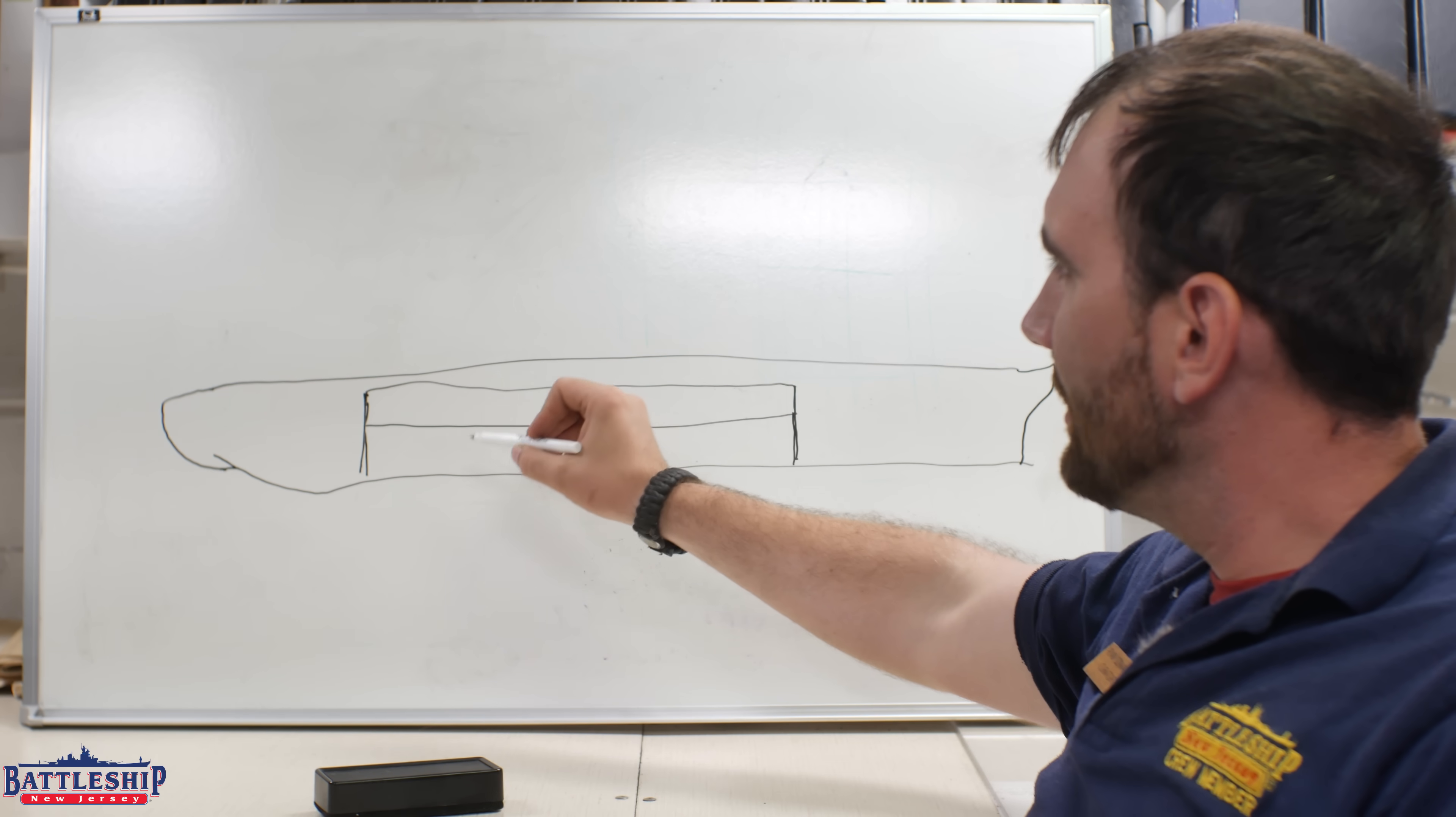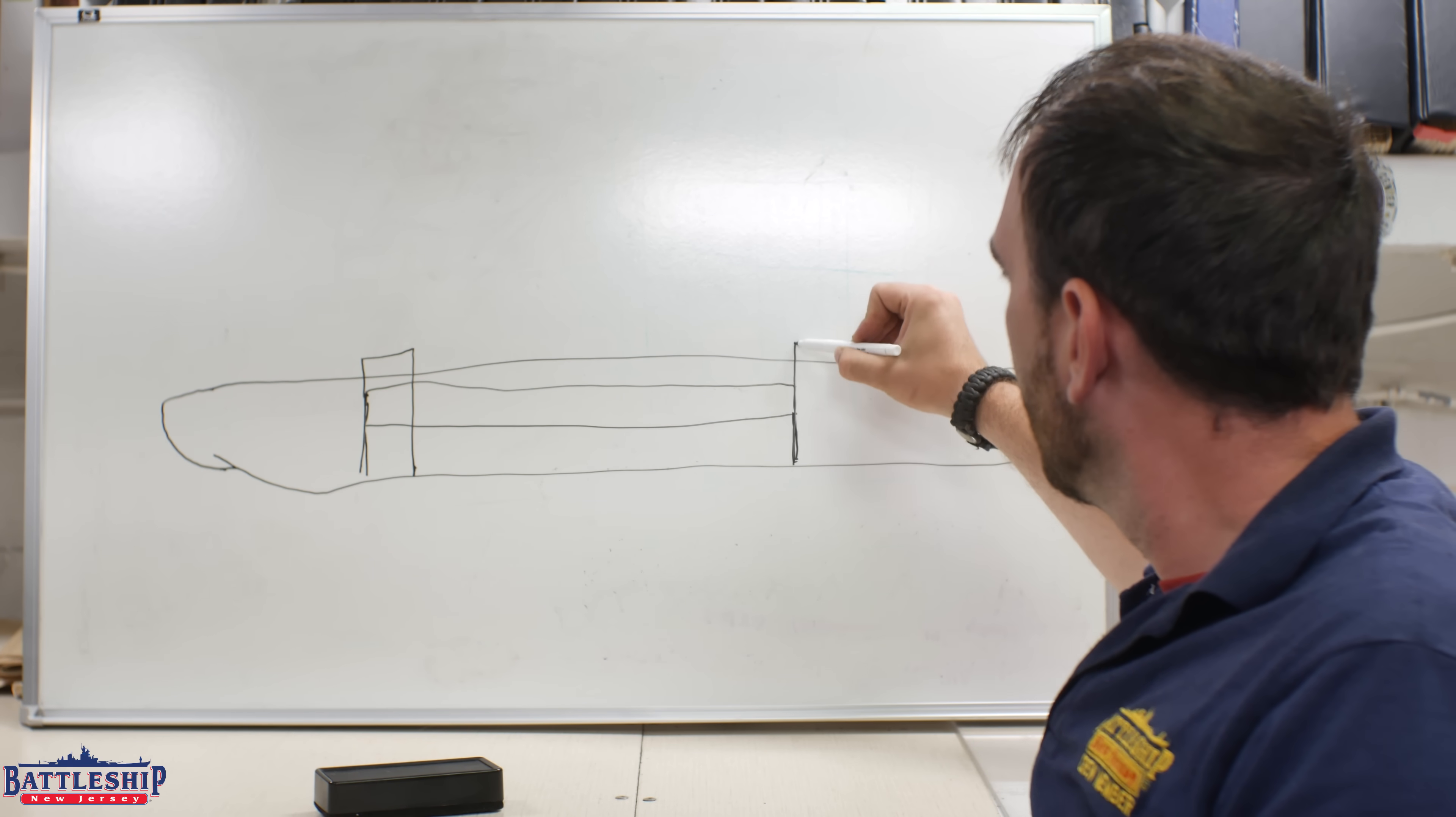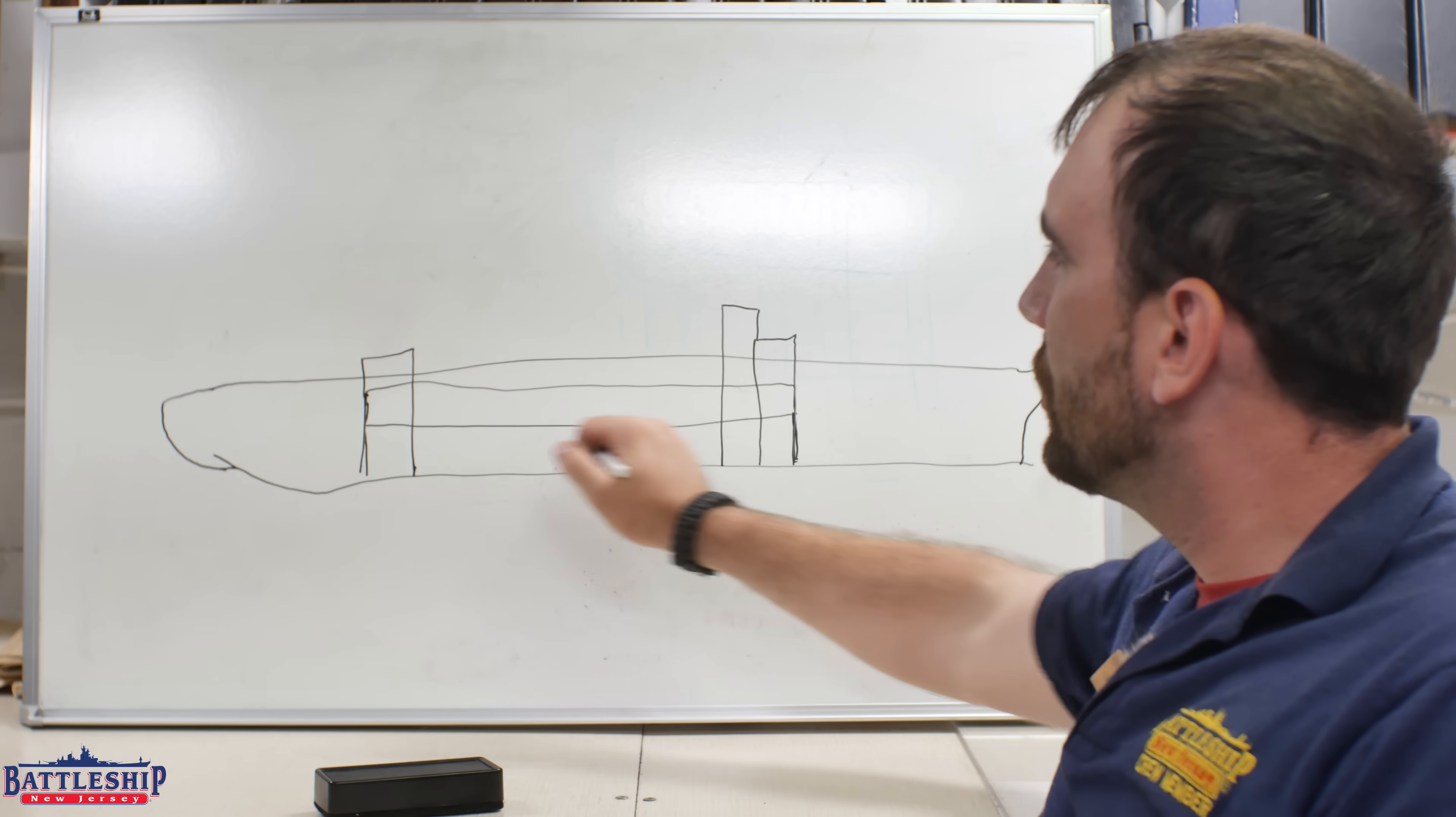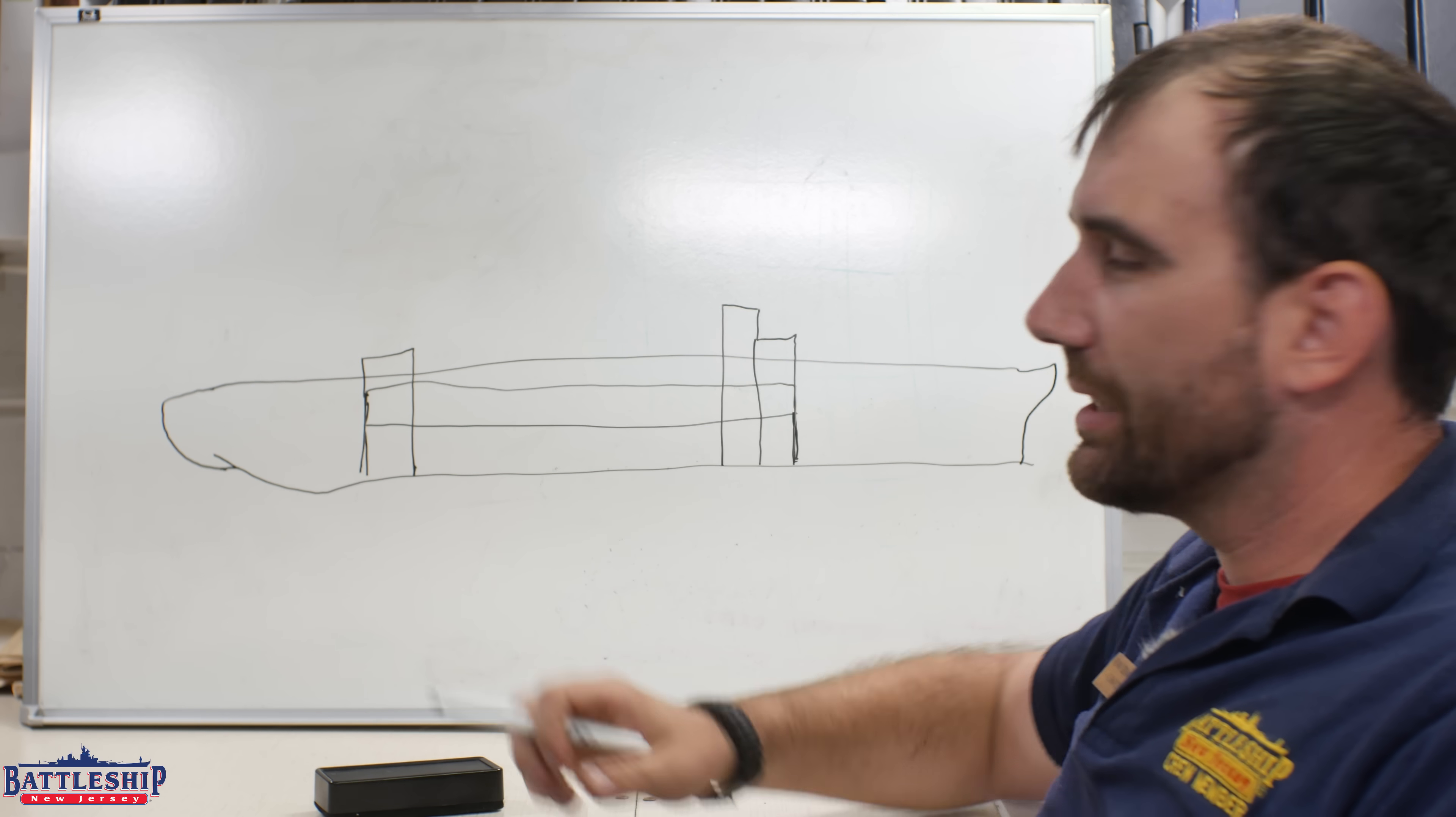What do we have inside of the citadel? We have the magazines for the gun turrets. Those would be roughly in these areas. And then all the space in between is the engine room. In our case, we've got four fire rooms and four engine rooms, so those are all protected in here.